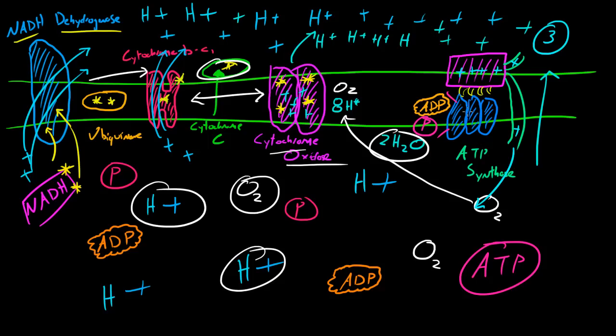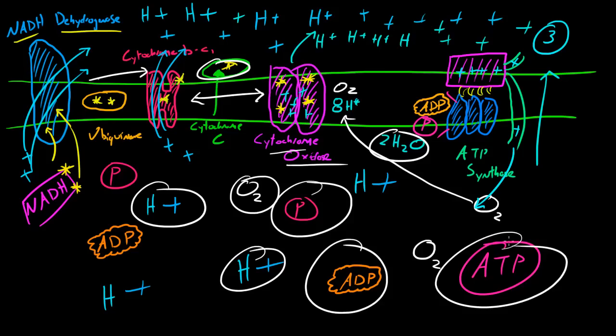So whenever this gets enough energy from these ions, it can take an ADP and a phosphate from the matrix, and it could crash them together because it takes energy to combine molecules together. So it's going to take these two molecules and crash them together to form ATP.